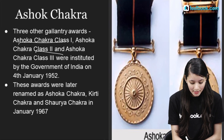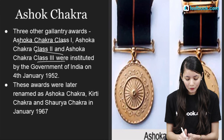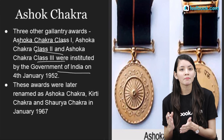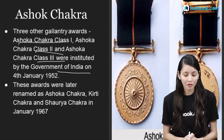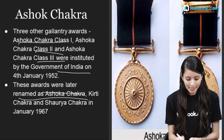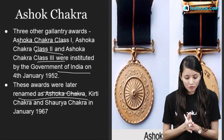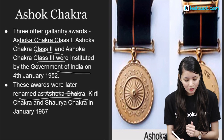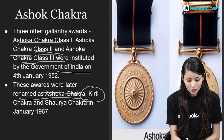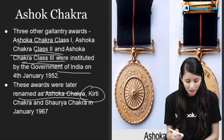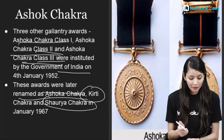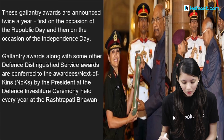These awards were instituted a few days after the other Gallantry Awards. They were later renamed: Ashok Chakra Class 1 became Ashok Chakra, Ashok Chakra Class 2 was renamed Kirti Chakra, and Ashok Chakra Class 3 was renamed Shaurya Chakra. All these renamings happened in January 1967.